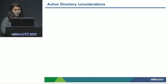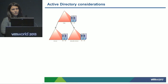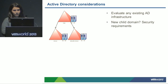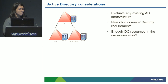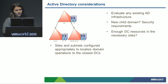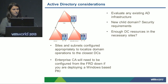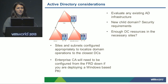Let's talk about active directory considerations. Your AD directory structure should be evaluated before you implement our products. There may be security requirements that require a trusted child domain. Make sure you have redundant ADDCs for your different sites. Lastly, think about your public key infrastructure, especially if you're going to deploy a Microsoft Enterprise CA. Certificates are always a pain point, especially with vCenter and vSphere — you want to have your certificates ready before you get to View and Workspace.